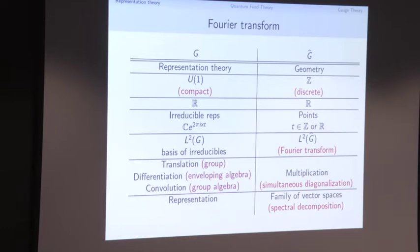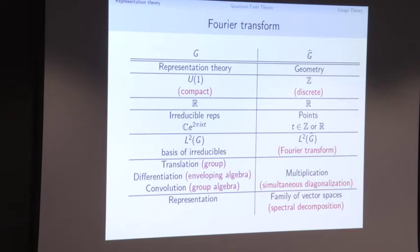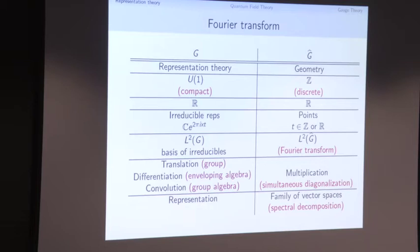The irreducible representations — these exponentials, the characters e^(2πixt) — where t is either integral or real depending on whether you're in the circle or real group — actually form a basis for functions on G. That gives us the Fourier transform: we can write any function on G in this basis of characters, and the coefficients become a function on G-hat. This gives a unitary isomorphism between L²(G) and L²(G-hat).